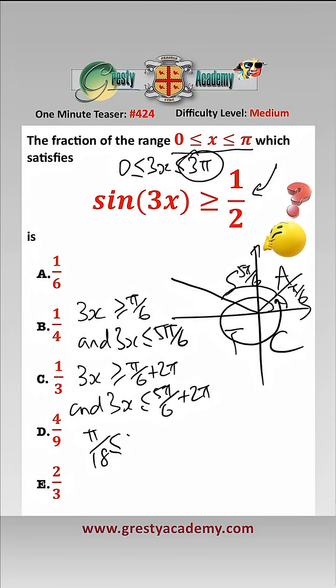we get that π/18 less than or equal to x less than or equal to 5π/18. That's from this one.